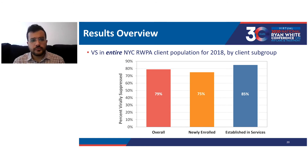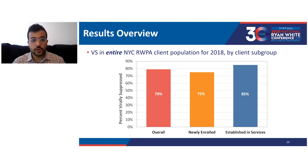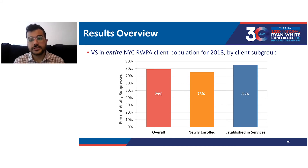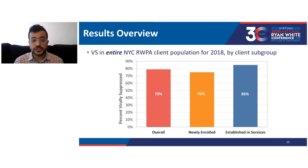When we look at viral suppression in the entire New York City Ryan White Part A population for 2018 by client subgroups — representing all NYC clients across all agencies — we see that overall 79% of New York City Ryan White Part A clients are virally suppressed, 75% for clients newly enrolled, and 85% for clients established in services. Keep these numbers in mind as a reference as we look at the distribution of viral suppression values among the 65 agencies who received an AVSR for that year.